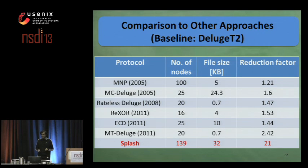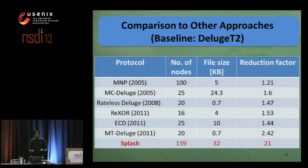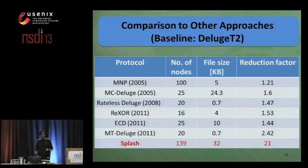The table compares SPLASH against many other existing protocols using Deluge T2 as a baseline, depicting the reduction factors achieved by these protocols compared against Deluge T2. The maximum reduction factor achieved by an existing protocol is only 2.42.